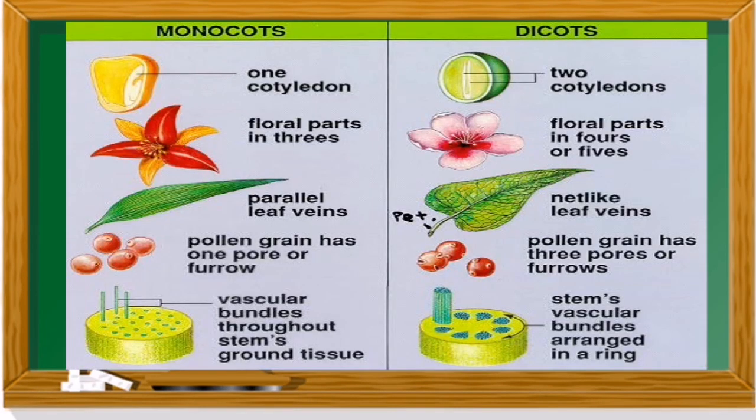So in monocots: one cotyledon, floral parts in threes, parallel leaf veins, pollen grain with one pore, and vascular bundles scattered in stem ground tissue. In dicots: two cotyledons, floral parts in fours or fives, net-like leaf veins, pollen grain with three pores or furrows, and stem vascular bundles arranged in a ring.